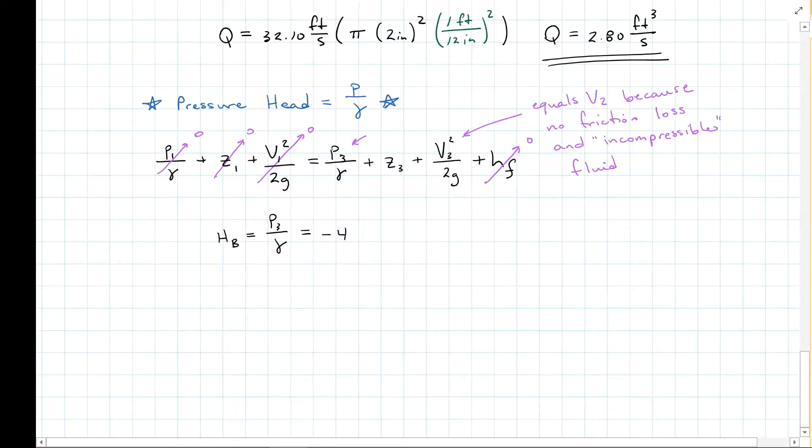Z3 is 4 feet, so this is going to be minus 4 feet when we move it to the other side, minus the velocity 32.1 feet per second, quantity squared, all over 2 times gravity, and we find that the pressure head at B is negative 20 feet.